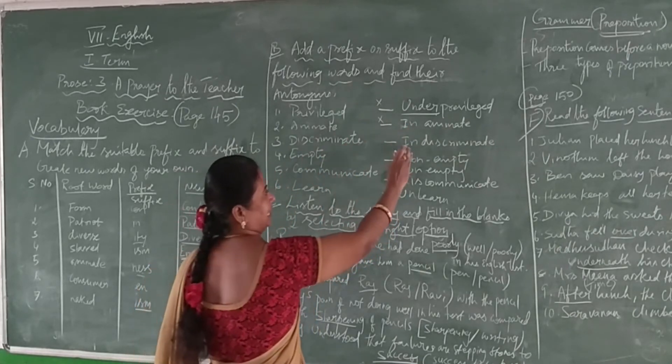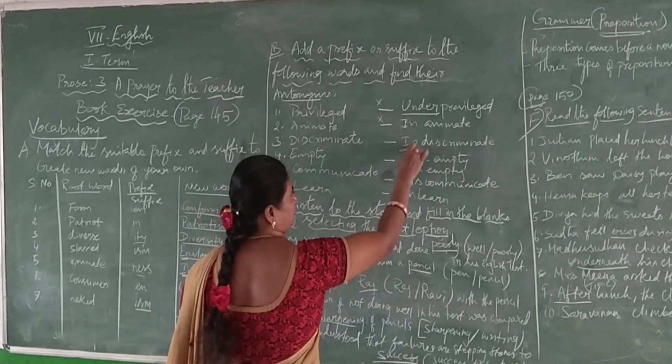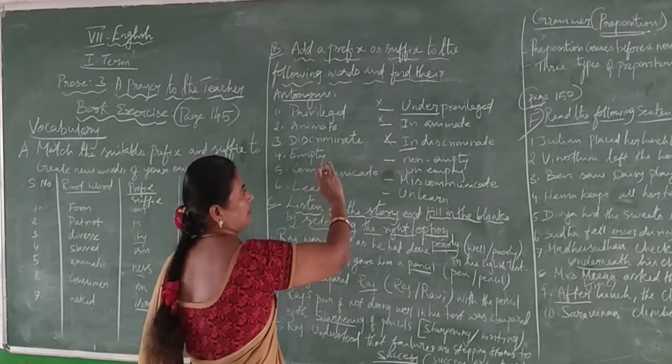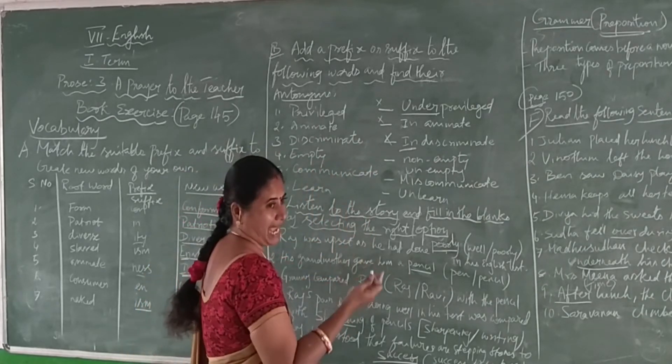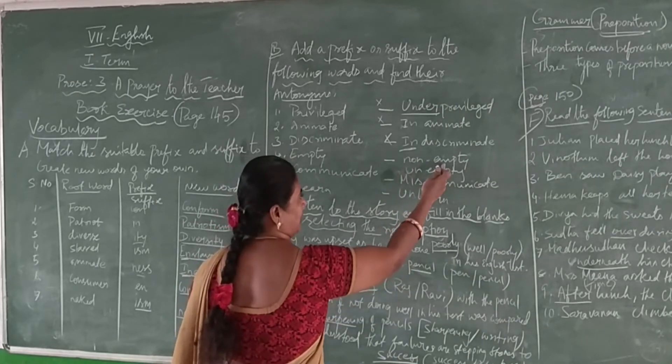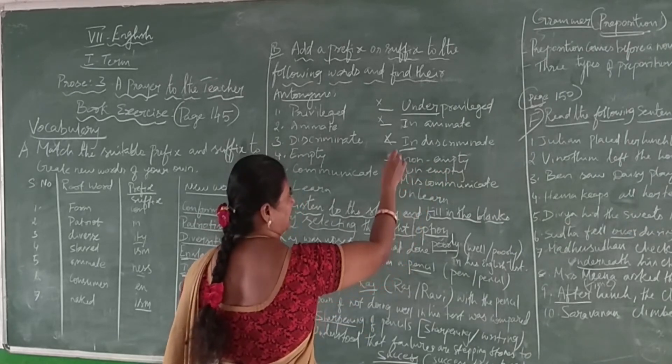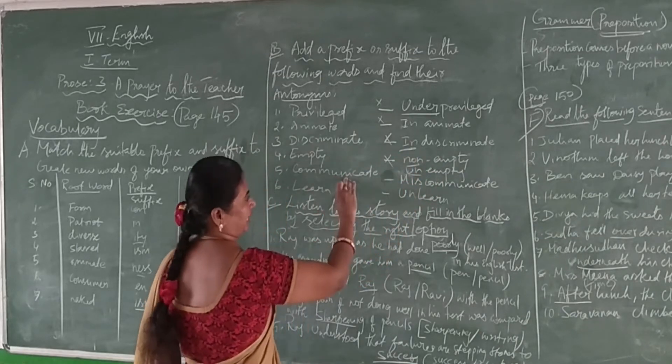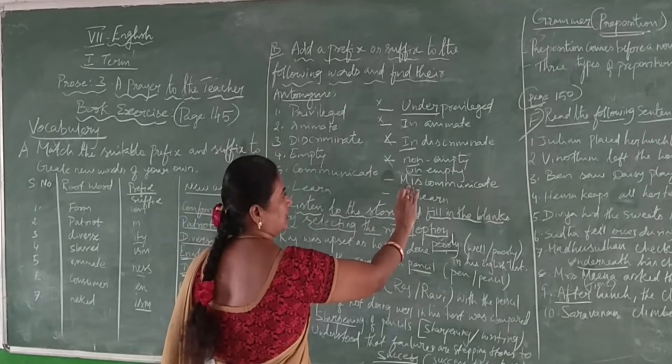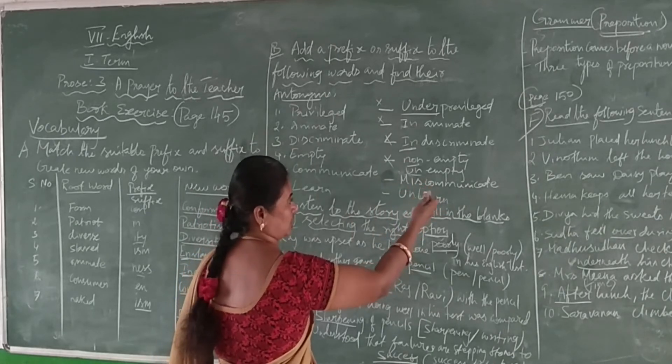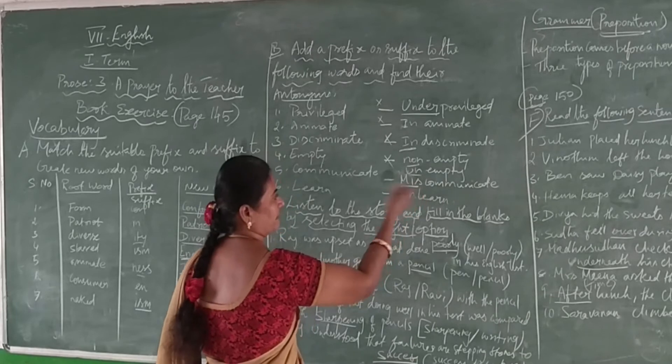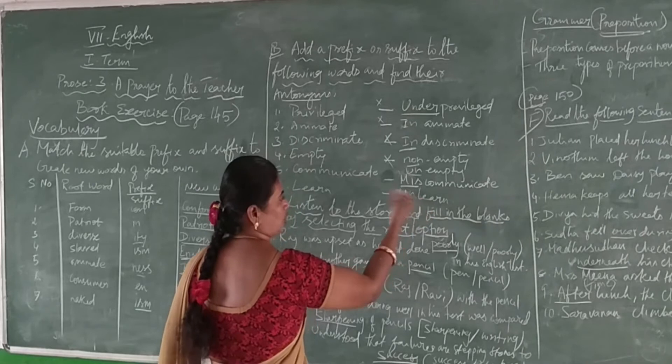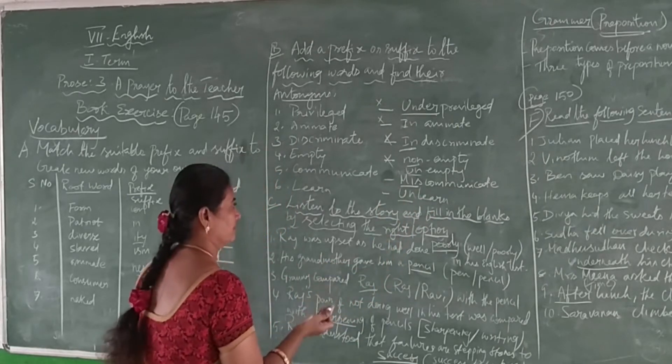'Discriminate' - opposite word is 'indiscriminate'. For 'empty' you can have any two: 'non-empty' or 'unempty', both are the same and should be prefix words. 'Communicate' - opposite is 'miscommunicate', the prefix word. 'Learn' - opposite is 'unlearn'.